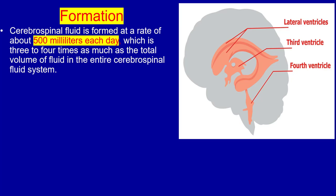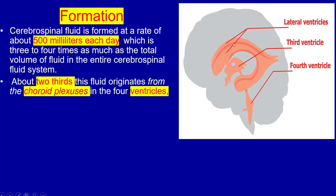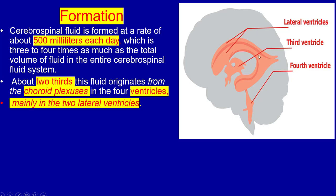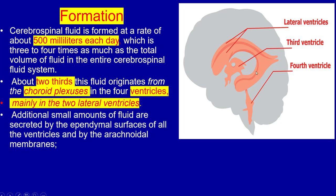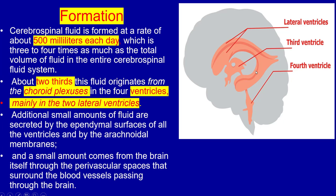Formation: cerebrospinal fluid is formed at a rate of about 500 milliliters each day, which is three or four times as much as the total volume of the fluid in the entire CSF system. About two-thirds of this fluid originates from the choroid plexus in the four ventricles, mainly in the two lateral ventricles. Additional small amounts of fluid are secreted by the ependymal surface of all the ventricles and by the arachnoid membrane, and a small amount comes from the brain itself through the perivascular space surrounding the blood vessels passing through the brain.